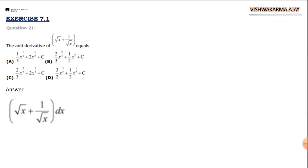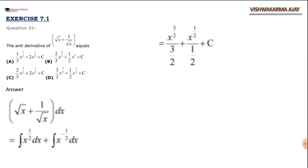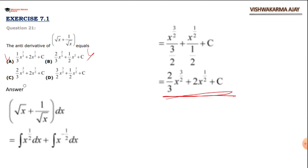Question 21 — Part 3 of Exercise 7.1 (MCQ): the antiderivative of √x + 1/√x — which option is correct? We write √x as x^(1/2) and 1/√x as x^(−1/2), then apply the standard integration formula. This gives (2/3)x^(3/2) + 2x^(1/2). Checking the options, option A and B fail; the correct answer is C.